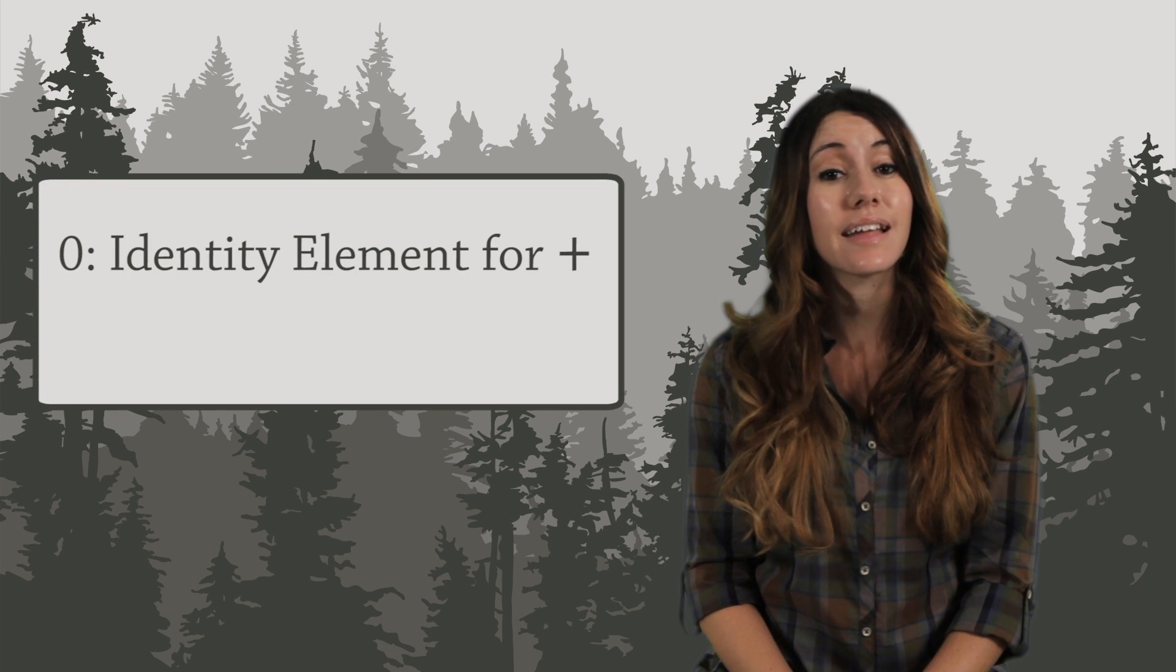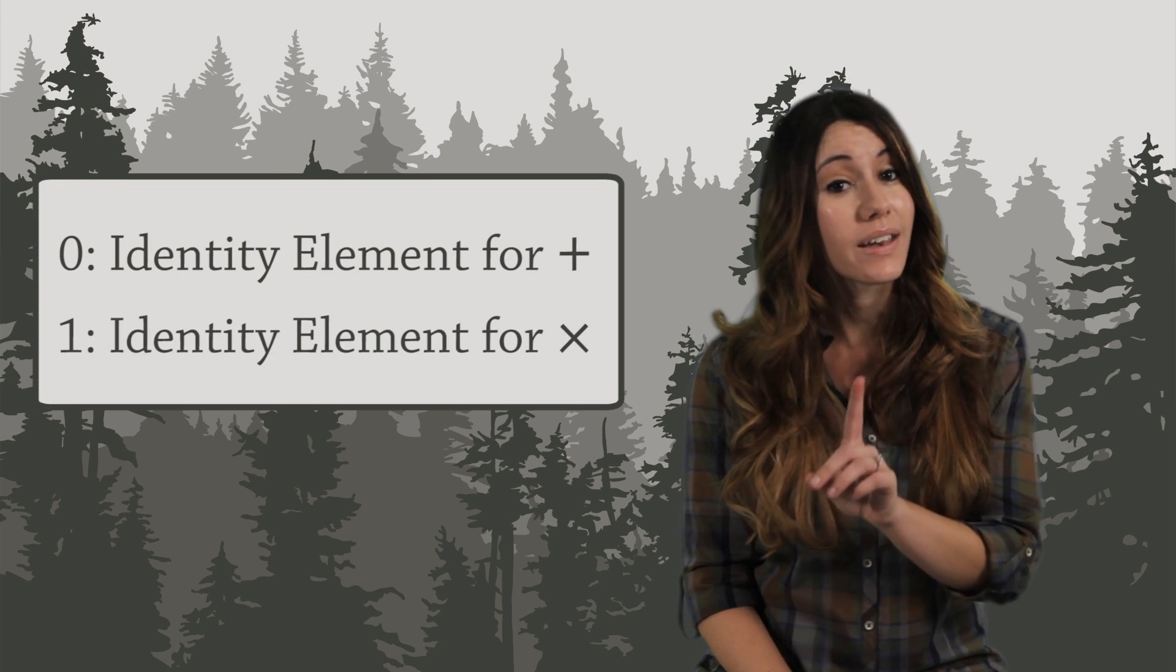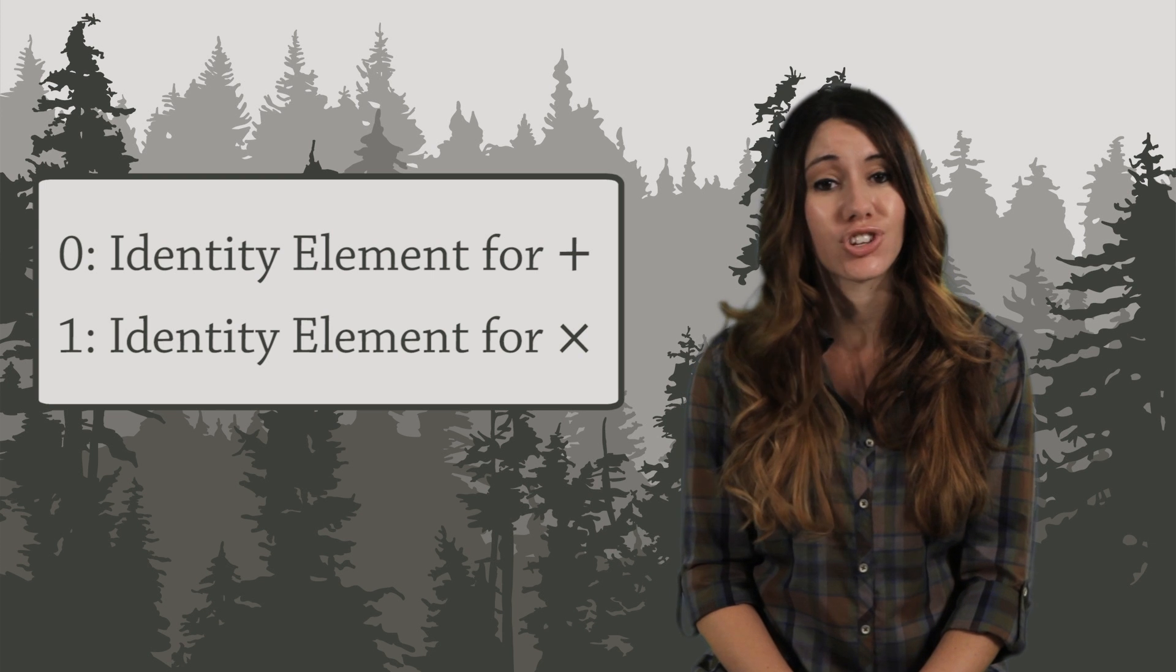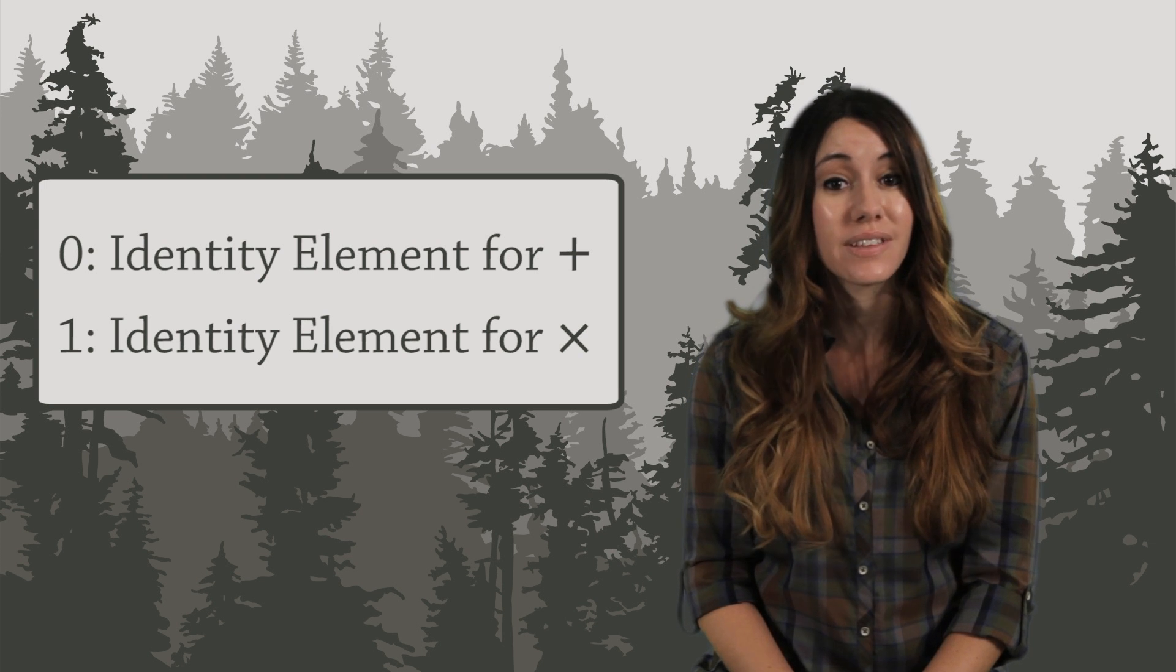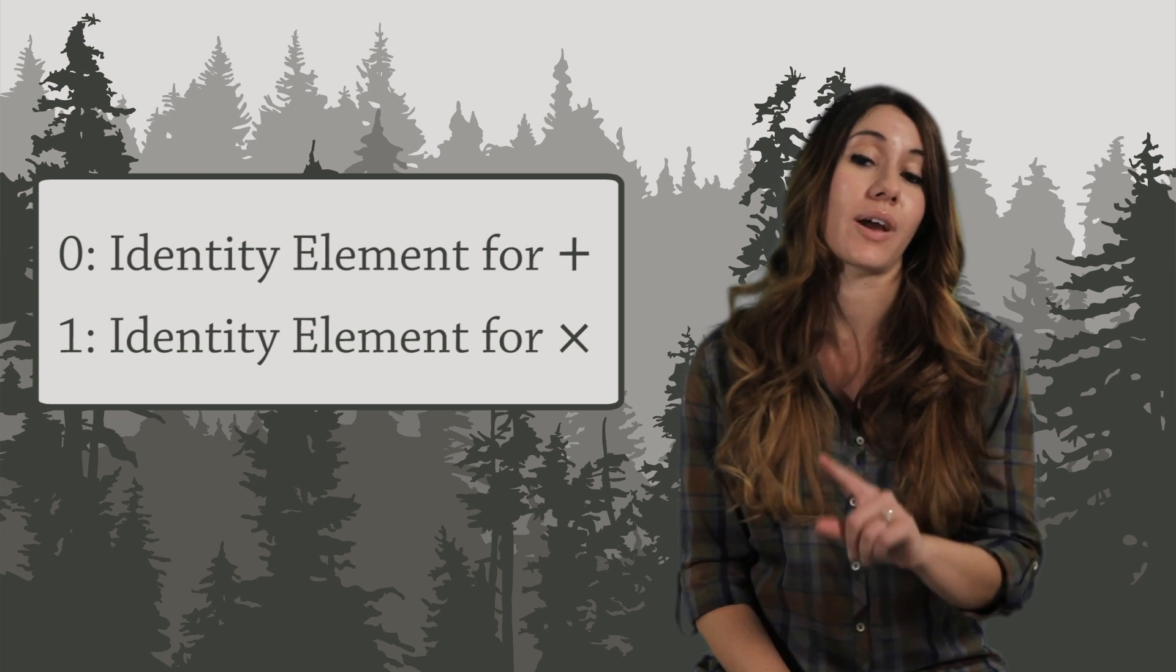So the integers 0 and 1 are both identity elements, but for different operations. 0 is the identity element for addition, and 1 is the identity element for multiplication. It's very important that you match the right number with the right operation.